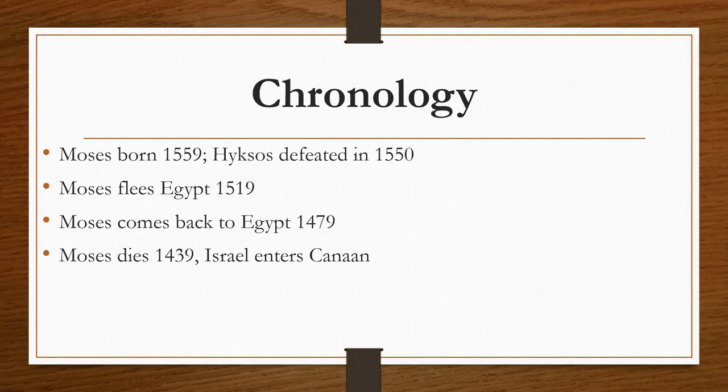Moses flees Egypt about 1519. We can't be too precise — it's more of an estimation. Exodus doesn't really break things down as clearly as we would like, so there's a little bit of room for error. Moses comes back to Egypt in about 1479, maybe 1480. Depending on how long he was there with the plagues — a few weeks versus a couple months — you've got that issue. Moses died about 1439. Take all these numbers as movable, as with anything in ancient history. Israel entered Canaan sometime around 1439.